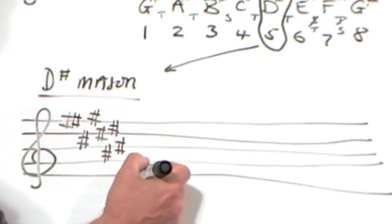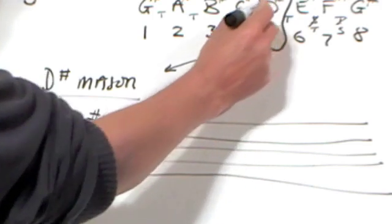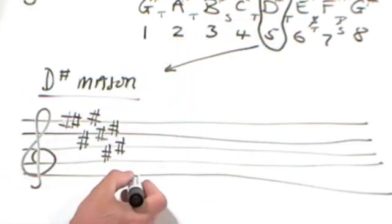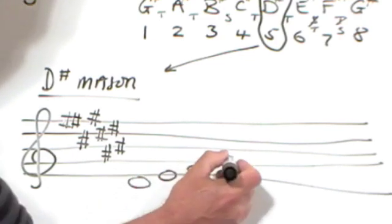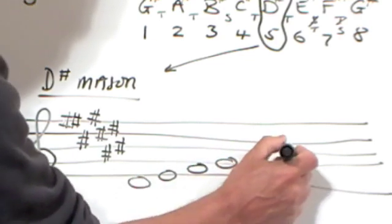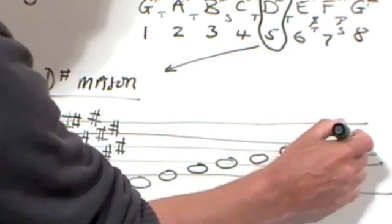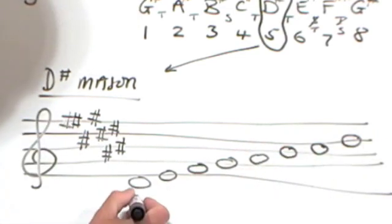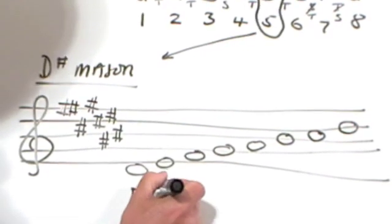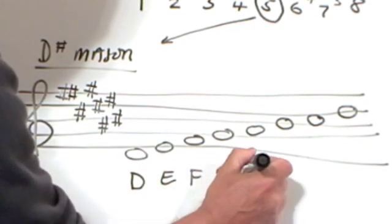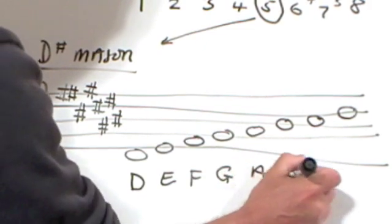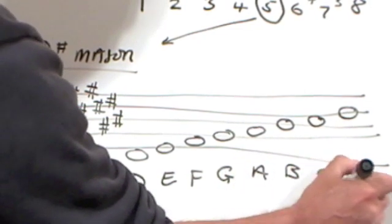That's how we do it. But now let's put the notes in from D sharp upwards. D, E, F, G, A, B, C, D. Letter names, D, E, F, G, A, B, C, D.